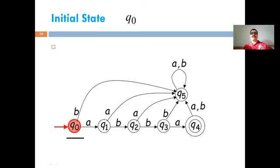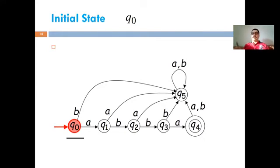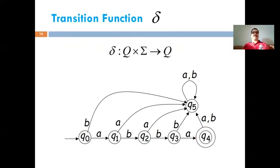The initial state is represented by a circle with an arrow. In this diagram, Q0 is the initial state. The final state is represented by two concentric circles — in this diagram Q4 is the final state. This covers all the tuples except the transition function.